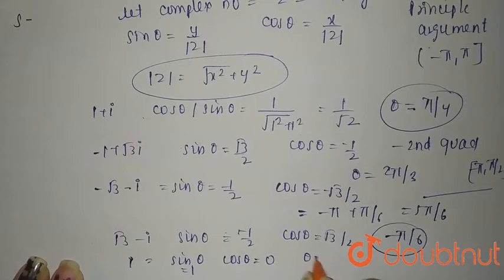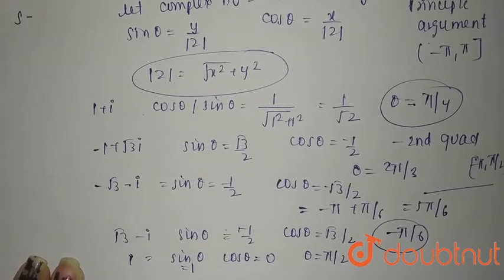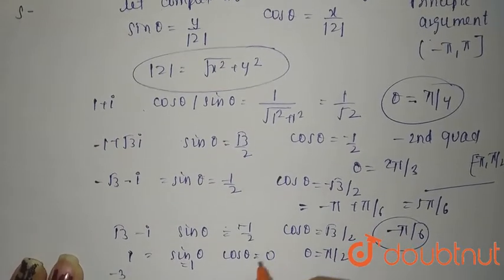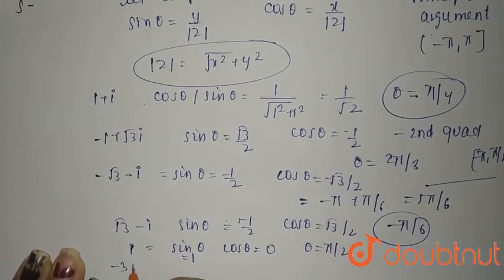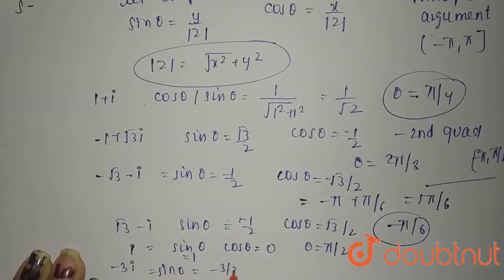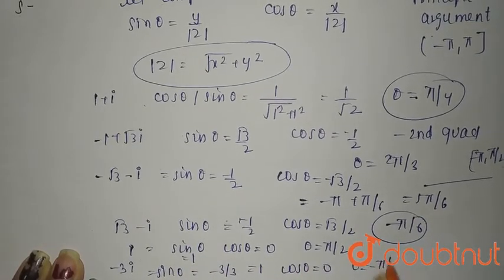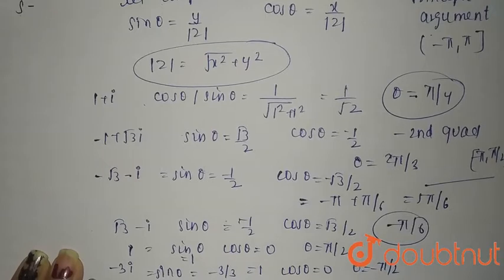For i: sin θ = 1 and cos θ = 0, so θ = π/2. For −3i: sin θ = −3/3 = −1 and cos θ = 0, so θ = −π/2.